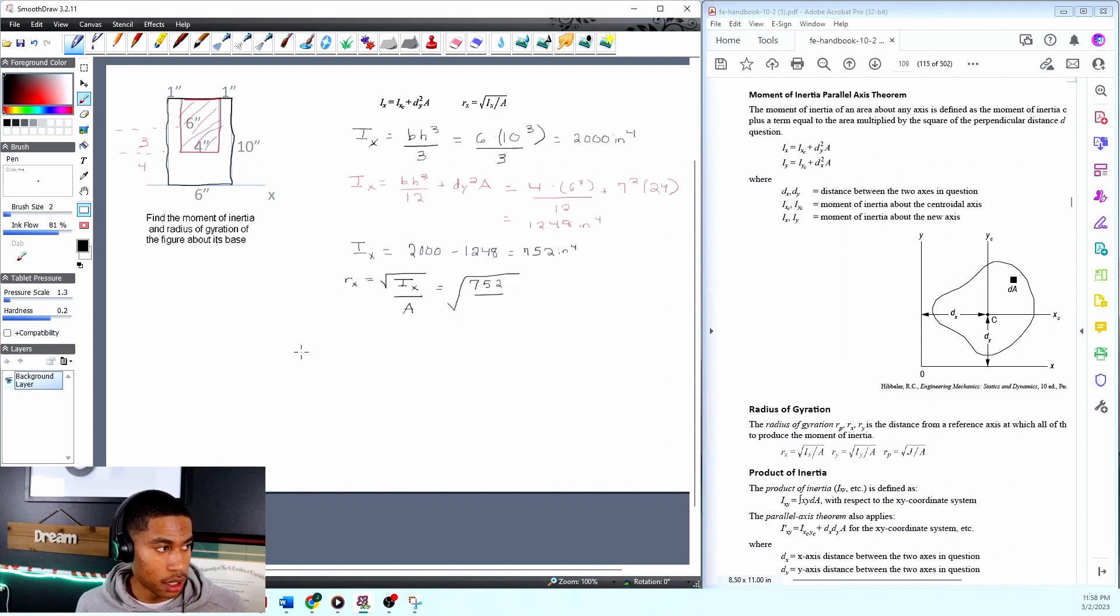And then what is a? a is just going to equal, I can do this on the side. a equals 6 times 10, minus 4 times 6. So 60 minus 24, which equals 36. So square root of 752 divided by 36. I'm getting 4.57, and I believe that is a distance, so inches.